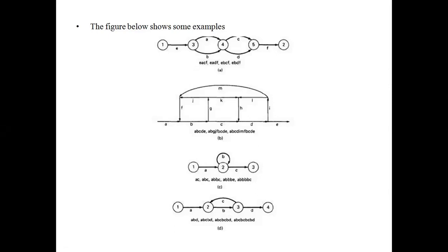Coming to the third example, node 2 consists of a loop. A loop is represented in a recursive format in the flow graph — link B is repeated indefinitely. The paths of this particular diagram are: ABC, ABBC, ABBBC, and so on. The repetition is done for B, and that is called a loop.